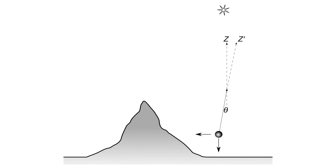Not only that, it also had to allow for precession, aberration of light, and nutation. Taking all of this into account, Maskelyne was able to show that the sum of the northern and southern deflections of the pendulum was 11.6 arc seconds — that's 0.00322 recurring degrees.